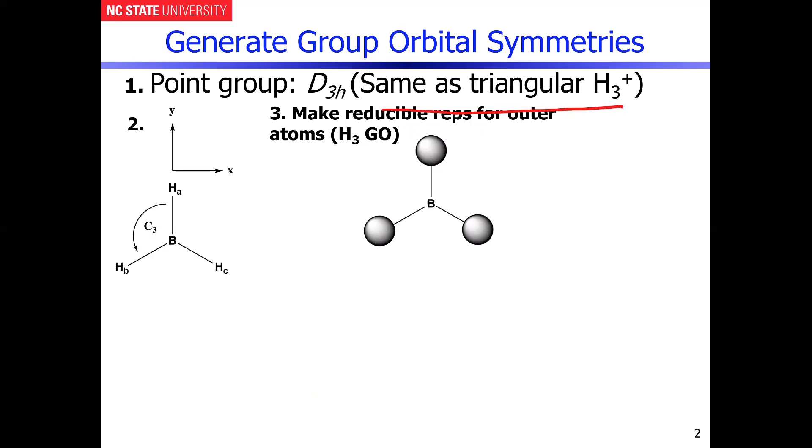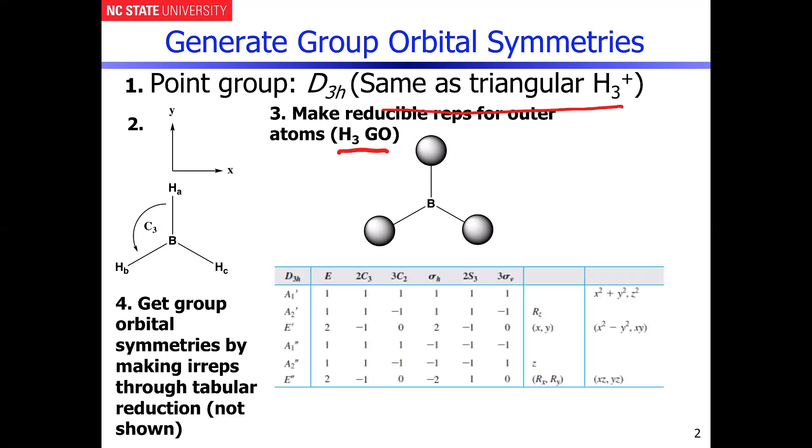So then we have to make the reducible representations for the outer atoms. So in this case, it's the H3 group orbital that we're concerned with. So in doing so, remember, we have to use the D3h point group.